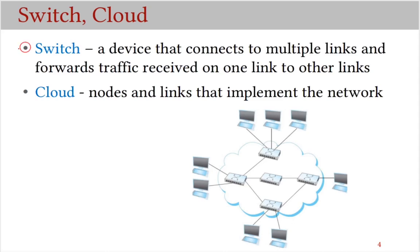Now some more terminology. A switch is a device that connects multiple links and forwards traffic received on one link to other links — it could be forwarding to just one link or to several other links. The rectangular slots to which wires are attached are called ports, and this is the symbol of a switch. As you can see, we can connect switches to build larger networks by connecting two ports on two switches with a link.